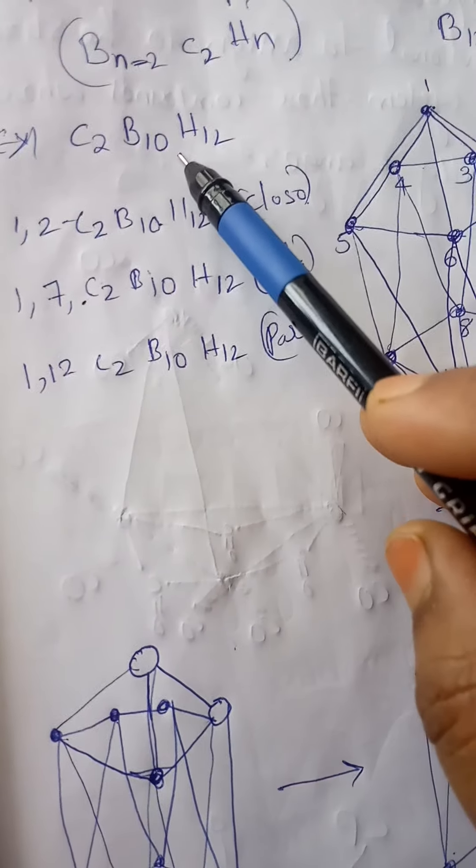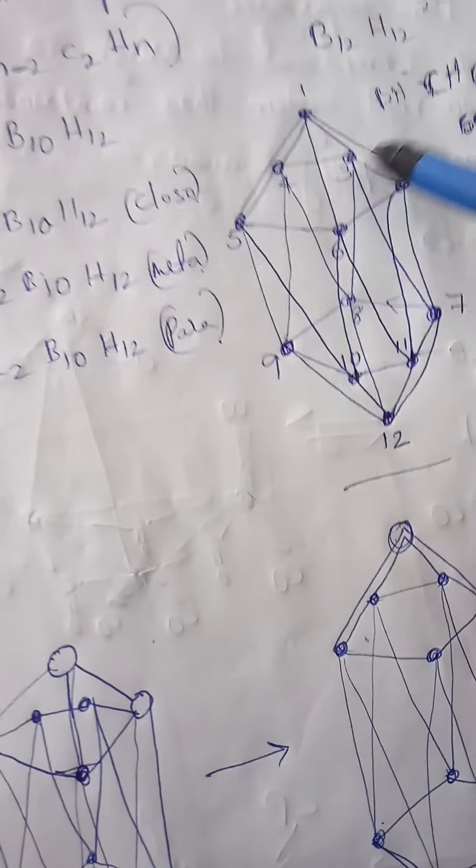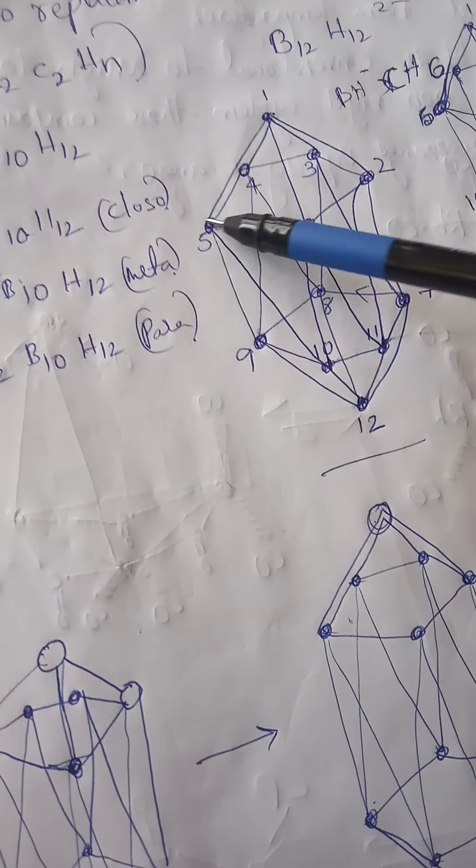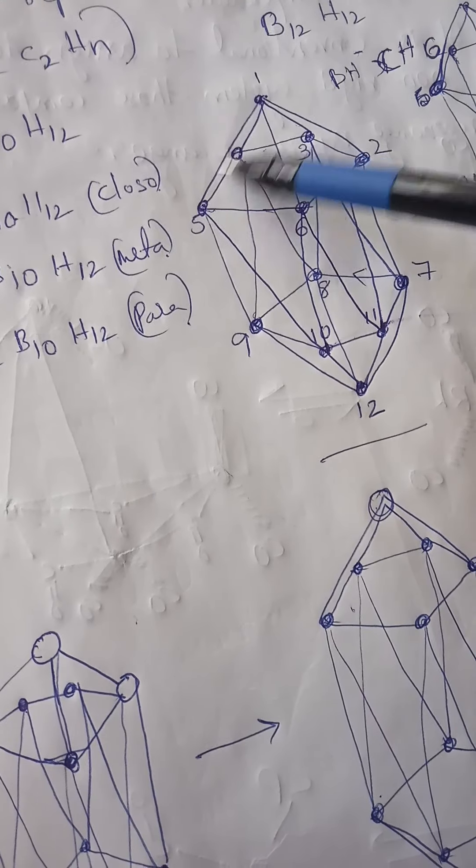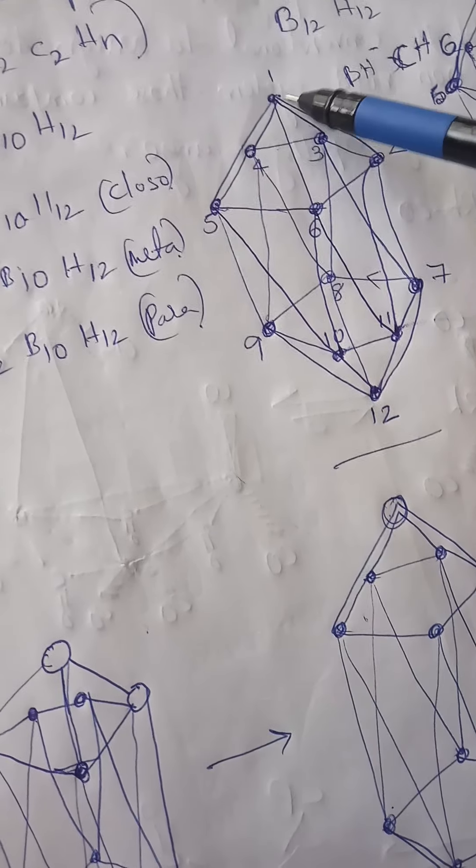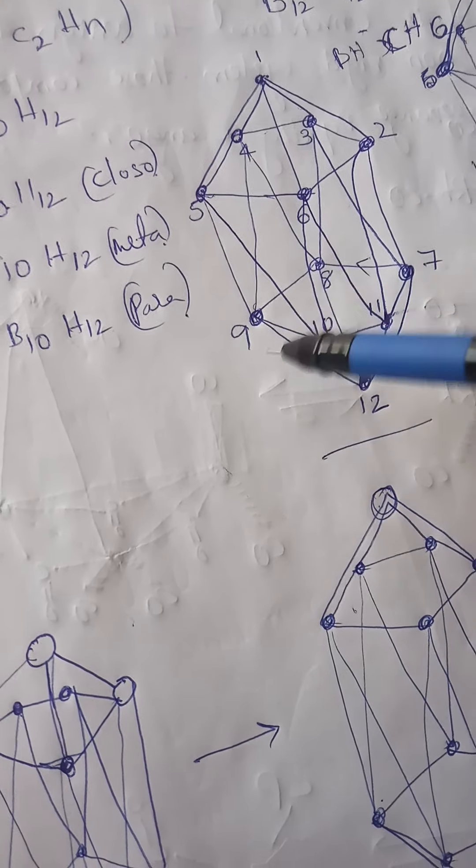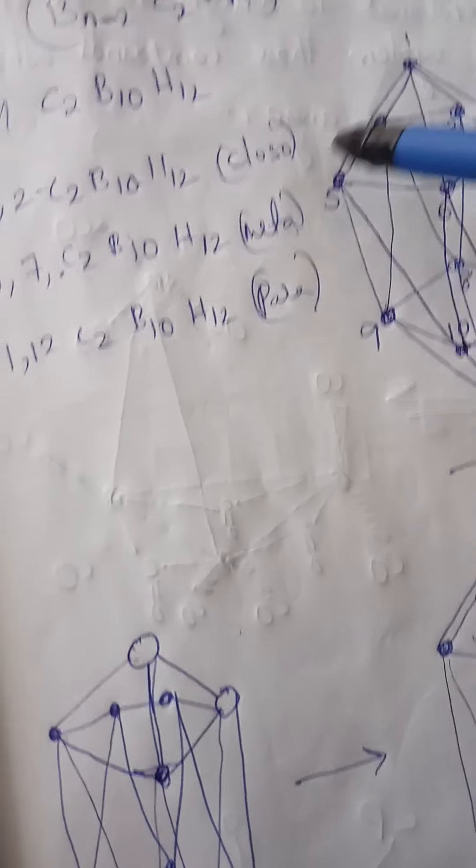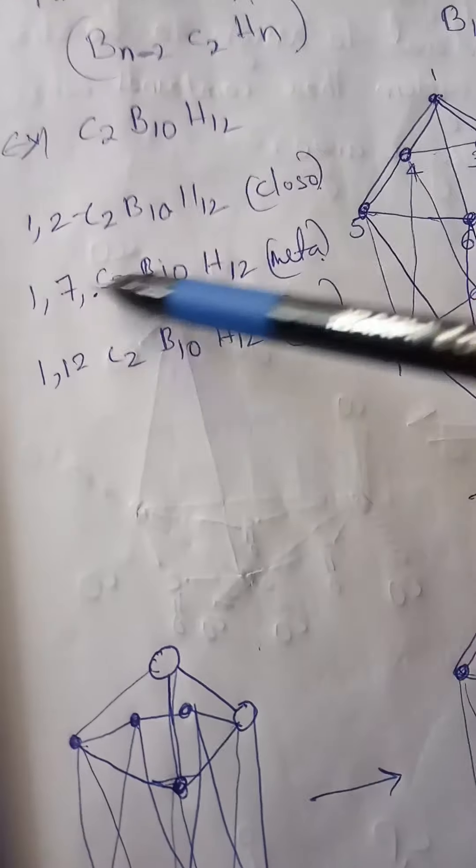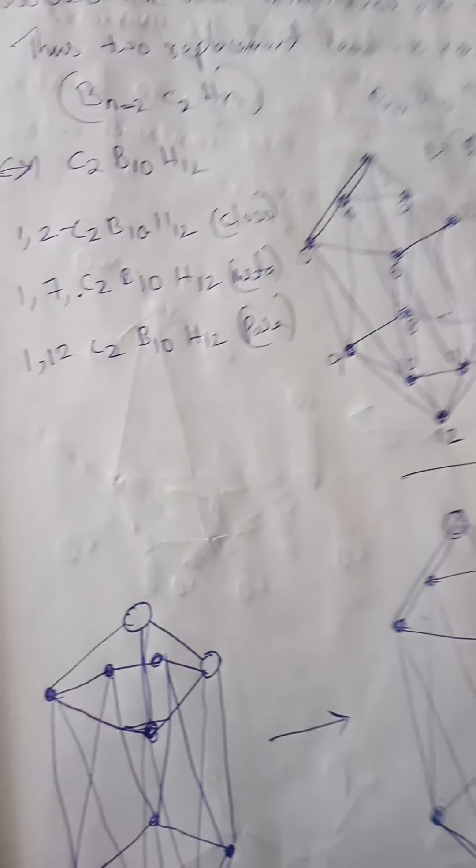With replacement of two carbons, we get C2B10H12. To draw this structure, first you draw the pentagonal structure, and on top one boron atom, and attach all the lines. And again at the bottom also same, you write like this structure. This type of structure is called 1,2-carborane.